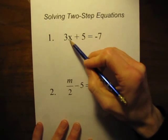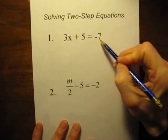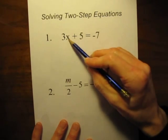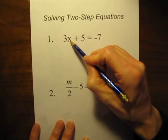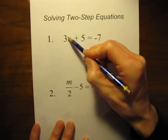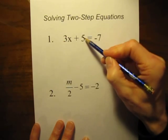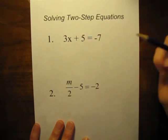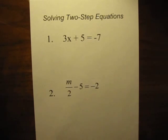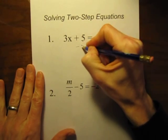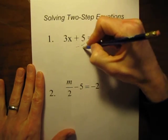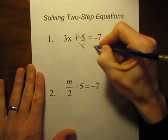For number one, three x plus five equals negative seven. What does x equal? We can figure it out. Two things we need to do: we need to get rid of this times three, and we need to get rid of this plus five. Let's start with the five. Whenever you want to remove something, you always do the opposite. The opposite of plus five is minus five, and five minus five is zero — that cancels.